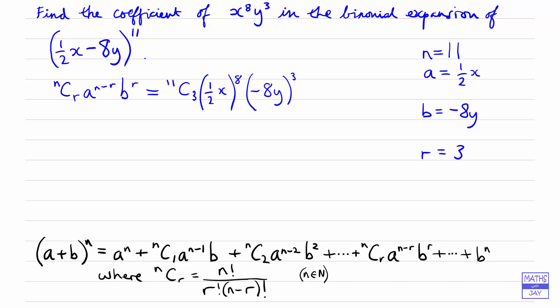You can see that when we multiply this out, we're going to get some number multiplying x to the 8 and y cubed. In other words, we're going to get the coefficient of x to the 8 times y cubed.